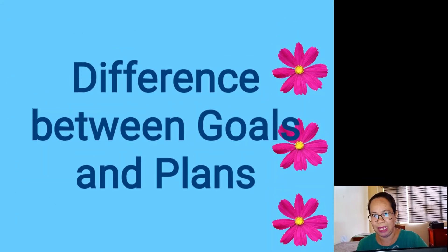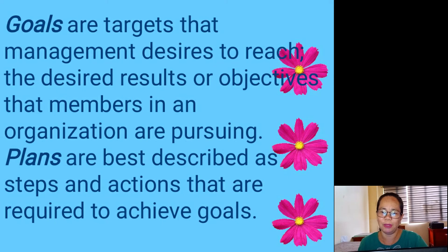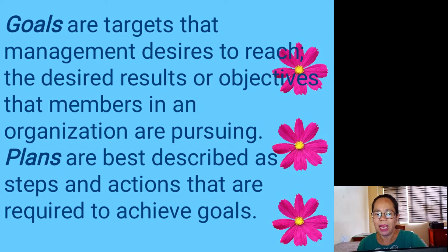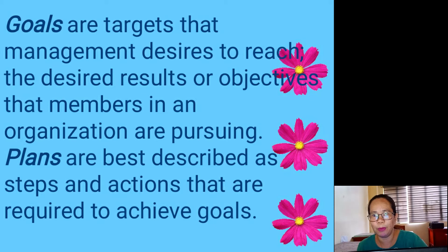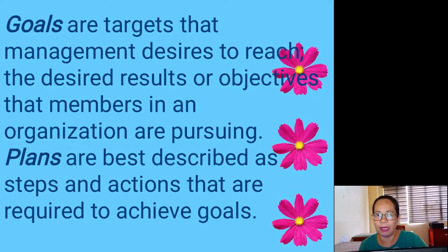What is the difference between goals and plans? Goals are targets that management desires to reach — the desired results or objectives that members of an organization are pursuing. Plans are best described as the steps and actions required to achieve goals. Can the two be separated? No. For example: your plan is to put up a business in 2021, and by 2022 you want three branches, by 2023 five branches, and by 2024 ten branches — those are your goals. The plans are the actions you take to make those ten branches materialize. Goals and plans cannot be separated from each other.